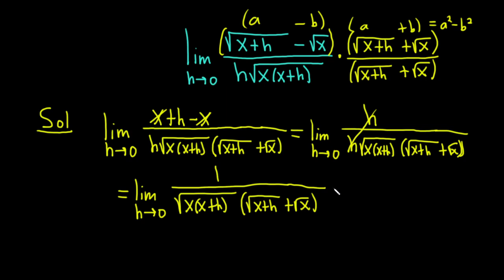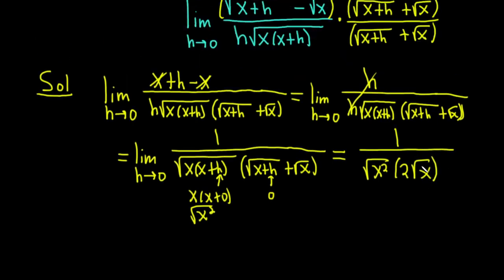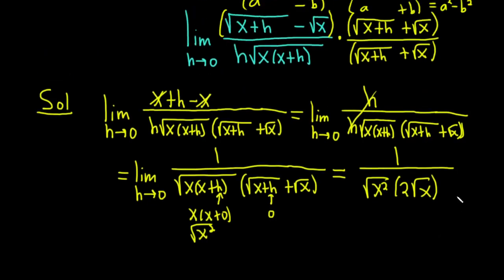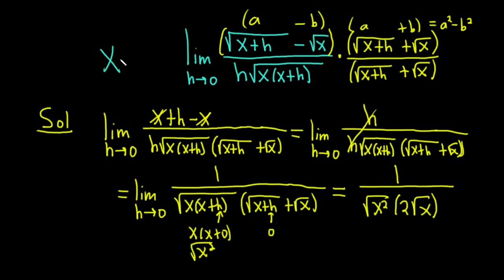When you plug in that value of 0, this is when you drop that limit sign. So we have 1 over, and let's see what happens here. If this is actually 0, we get x plus 0. So we just get x. We get x squared and we have a square root. We have the square root of x squared. And then here we have 0 for the h. So we're going to get the square root of x plus the square root of x. So it's going to be 2 square root of x. By the way, in all of this, x is not 0. I should have said that at the beginning of the problem. But that is a given in this question. We're told here that x is not equal to 0.